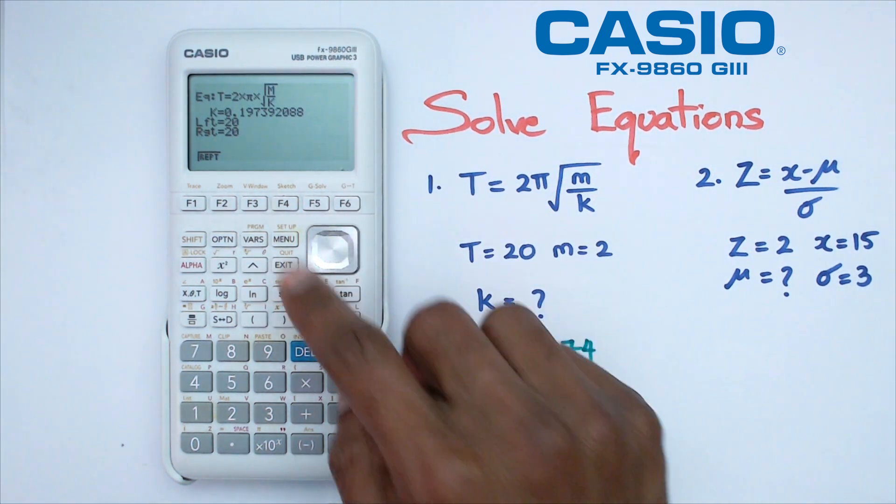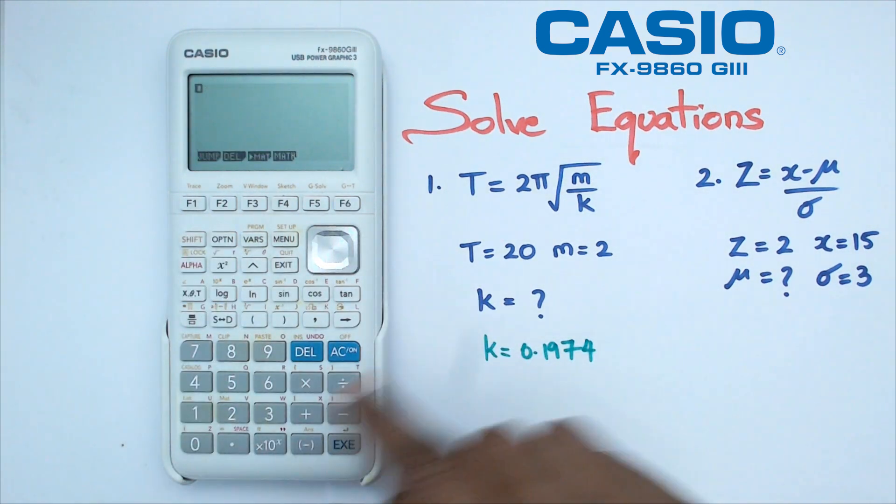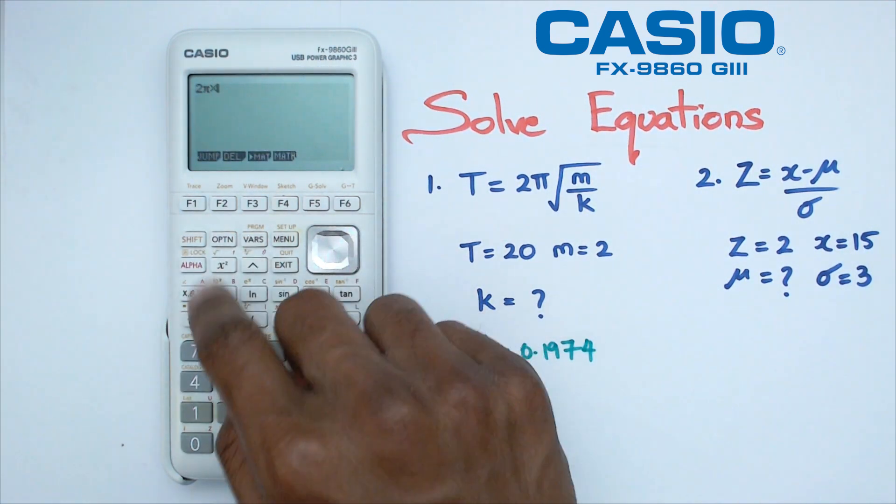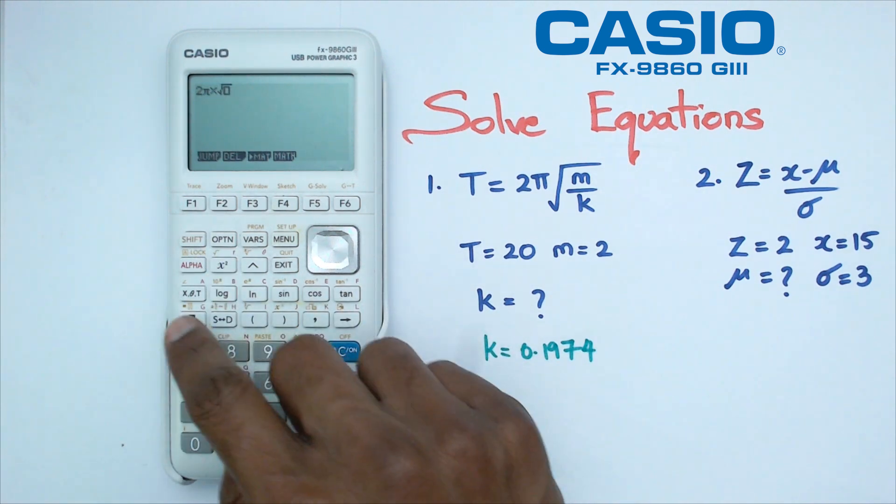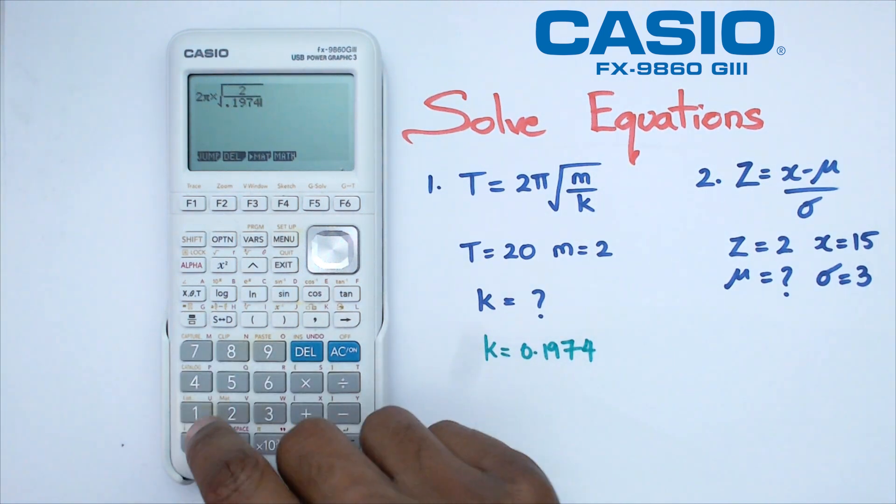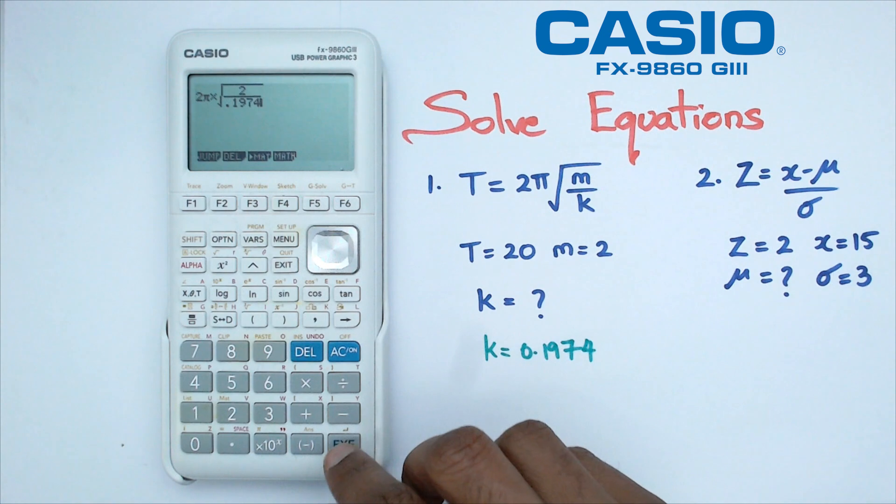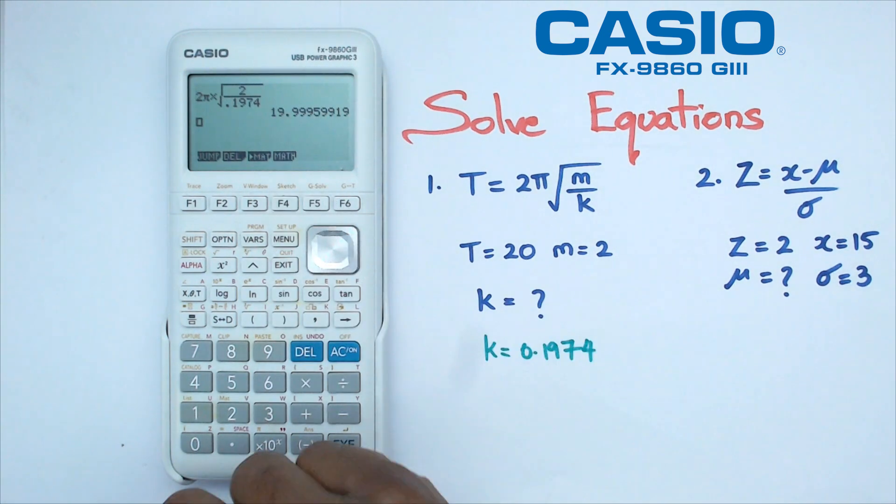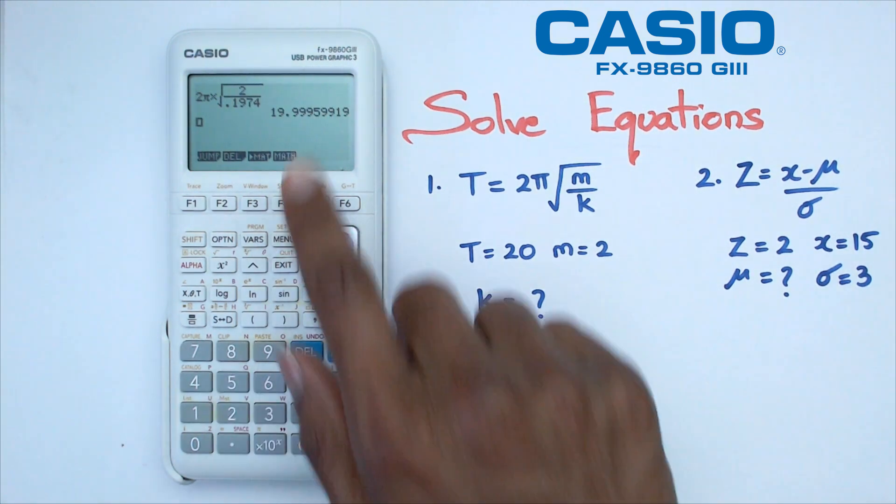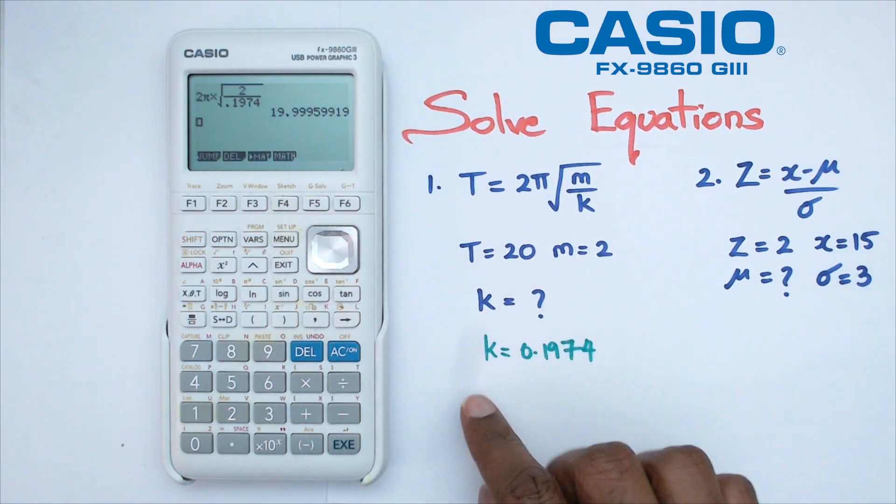What I'm going to do is go back to the main menu and just check if that's actually good to go. I'm going to go 2 pi multiplied, I'm going to do square root of a fraction, and m is equal to 2, and then in the denominator, I should have 0.1974. This is not going to be accurate, but as long as the answer is coming close to 20, then I think I'm on the right track. That's partially because of the rounding error. As you can see, I'm getting an answer of 19.999. That's close to 20, so I can say that k is equal to 0.1974.